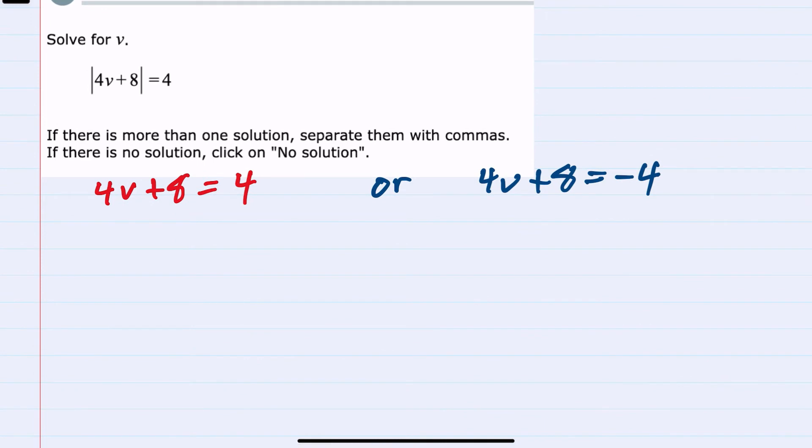Moving forward with our two solutions here, we can solve the expression on the left by subtracting 8 from both sides. To isolate the v, we now have 4v equals negative 4. Dividing by 4, the 4s would cancel on the left, leaving me v equals negative 1. And that is one solution.